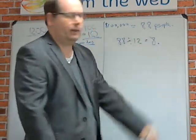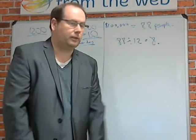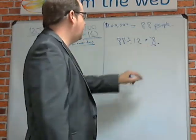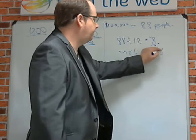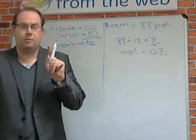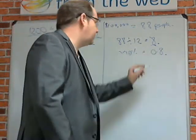So 88 divided by 12 gives me seven point something, so let's round it up. I can't have a part of a person, that would be horrible. So we're going to go 8 times 10% equals point 8.